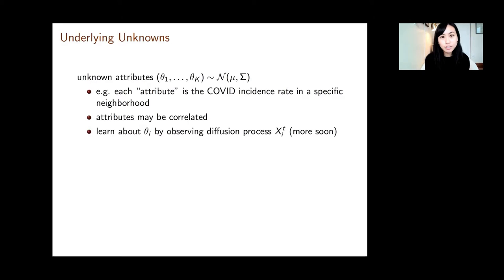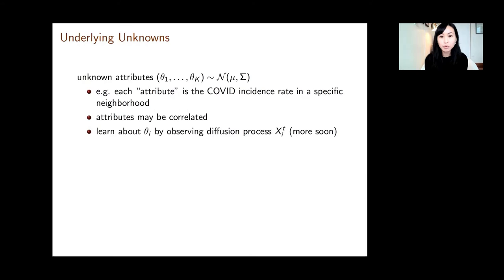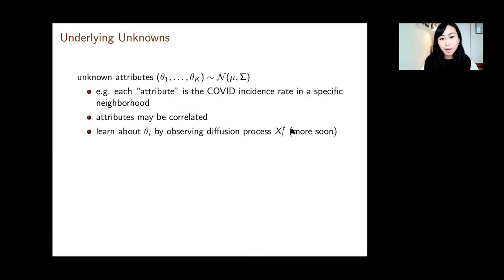We're going to start with K different unknown attributes, theta one through theta K, which we assume are jointly normal. In the COVID case, you can think about each of these attributes as being the COVID incidence rate in a specific neighborhood of the city. Critically, we're going to allow for these attributes to potentially be correlated — that's going to be important for a number of applications. In the COVID case, we might think that neighborhoods geographically near one another might have positively correlated COVID incidence rates, or likewise, neighborhoods with similar demographics might be correlated.